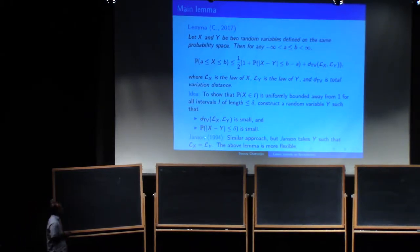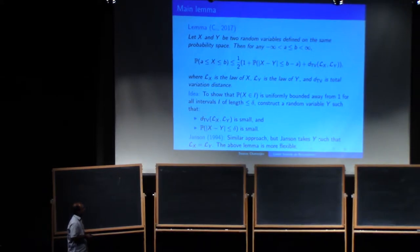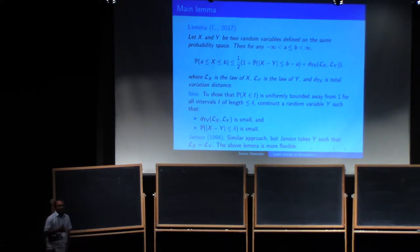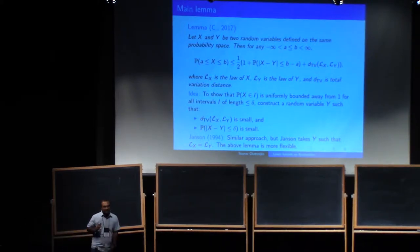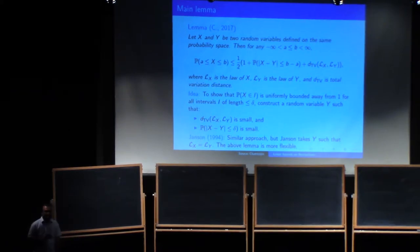There is this coupling technique due to Svante Janssen, and there's a similar approach, but in Janssen's lemma he takes y so that the law of x and the law of y are exactly the same. This lemma gives much more flexibility. Why do I use total variation distance instead of something like the Kolmogorov distance? There are specific reasons — there is a distinct advantage of using the total variation distance, which we'll discuss.